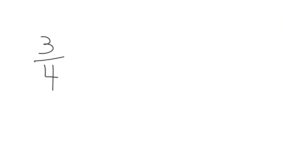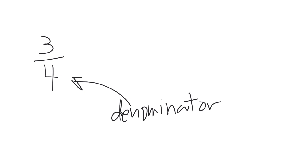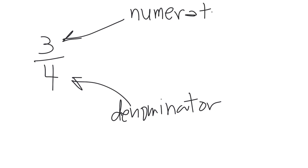When we talk about a fraction like three-fourths, that bottom number four is called the denominator. The denominator indicates how many pieces the whole has been cut into. The top number is called the numerator, and that tells us how many pieces we are talking about — how many pieces are being emphasized.